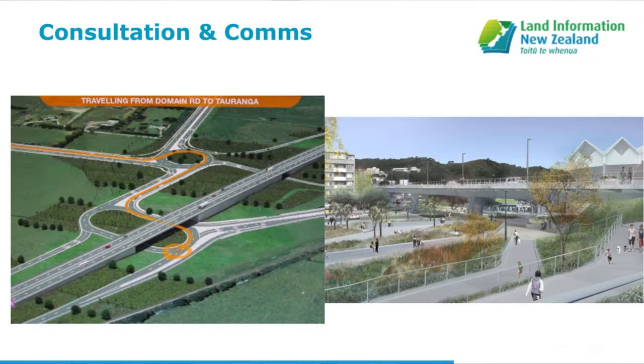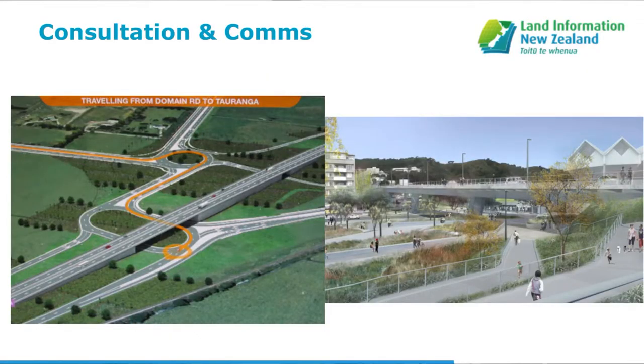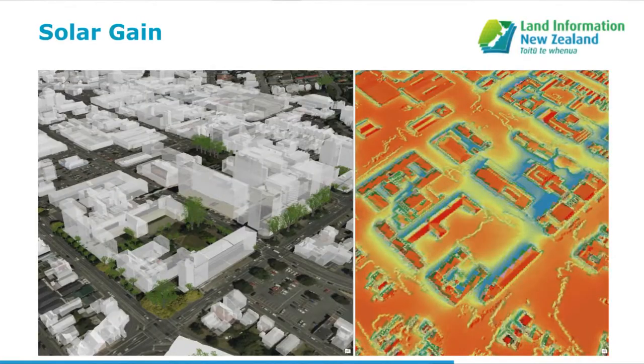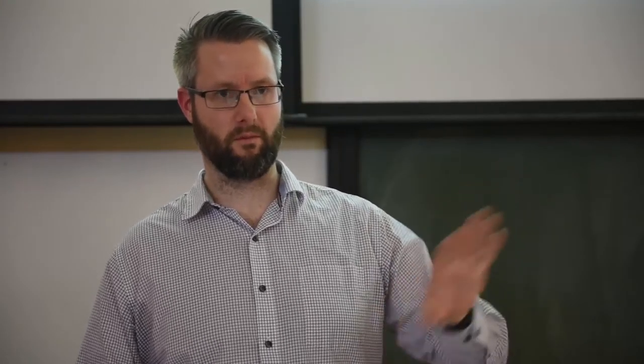We also use this sort of stuff in our consultation and communications, so this is when we want to predict the future, so we want to tell a story to someone about what one potential future will look like. On the left you've got the Taronga Eastern Link, and on the right you've got the flyover around the Basin Reserve. And we use this to help people engage with the consultation process to make sure that they're happy with what we're going to get. There's a study down around Otago, I think it's Otago University sitting down here, around solar gain. And again, it's just another application you can use. I know through Europe they use these sorts of things to understand where the best places for solar panels on houses.